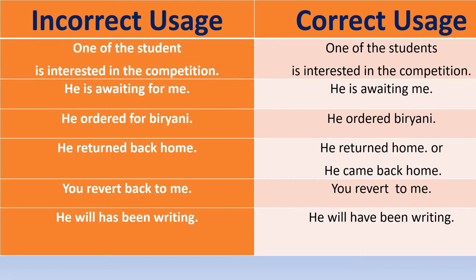On the left hand side you would find the incorrect usage and to the right side you would find the correct usage. 'One of the student is interested in the competition' — the correct one is 'one of the students is interested in the competition.'